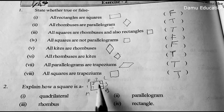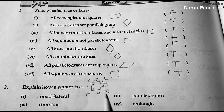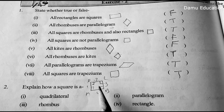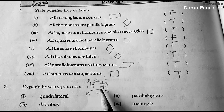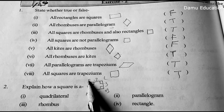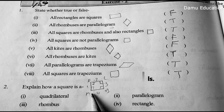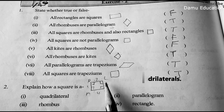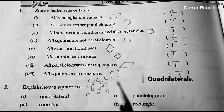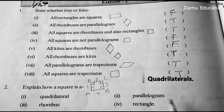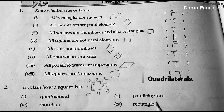A square is a parallelogram because it has a pair of opposite sides: AB is equal to BC and parallel, and AD is parallel to BC and equal in length. So a square satisfies the conditions of a parallelogram.